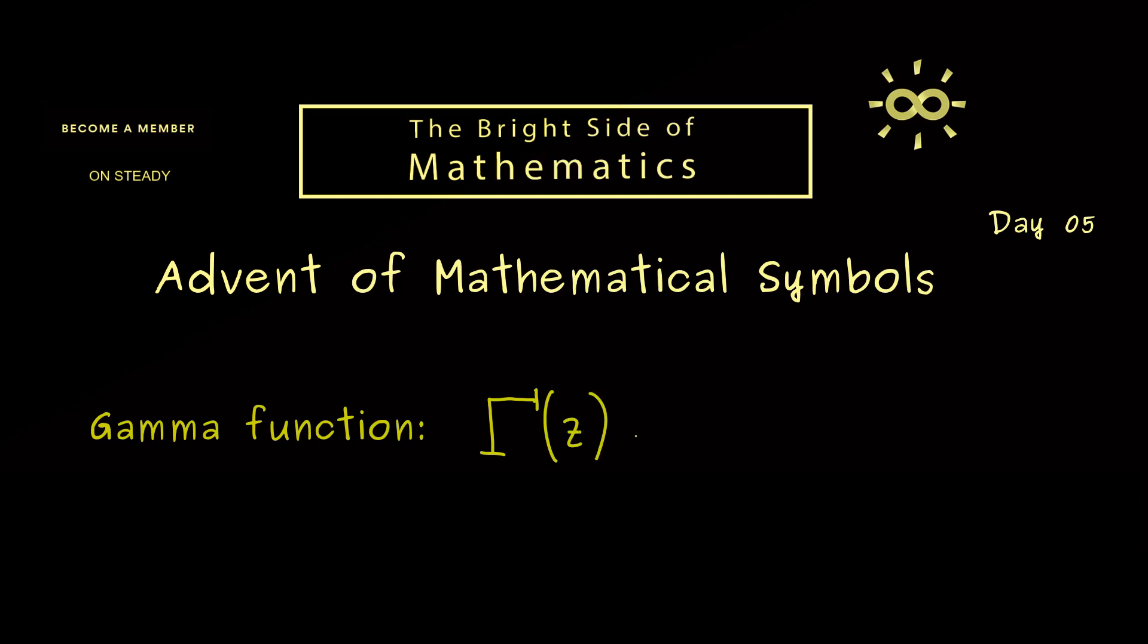The explicit definition of the gamma function is not so simple because it's given by an integral. We integrate from 0 to infinity, and the variable for the integration is given by x.